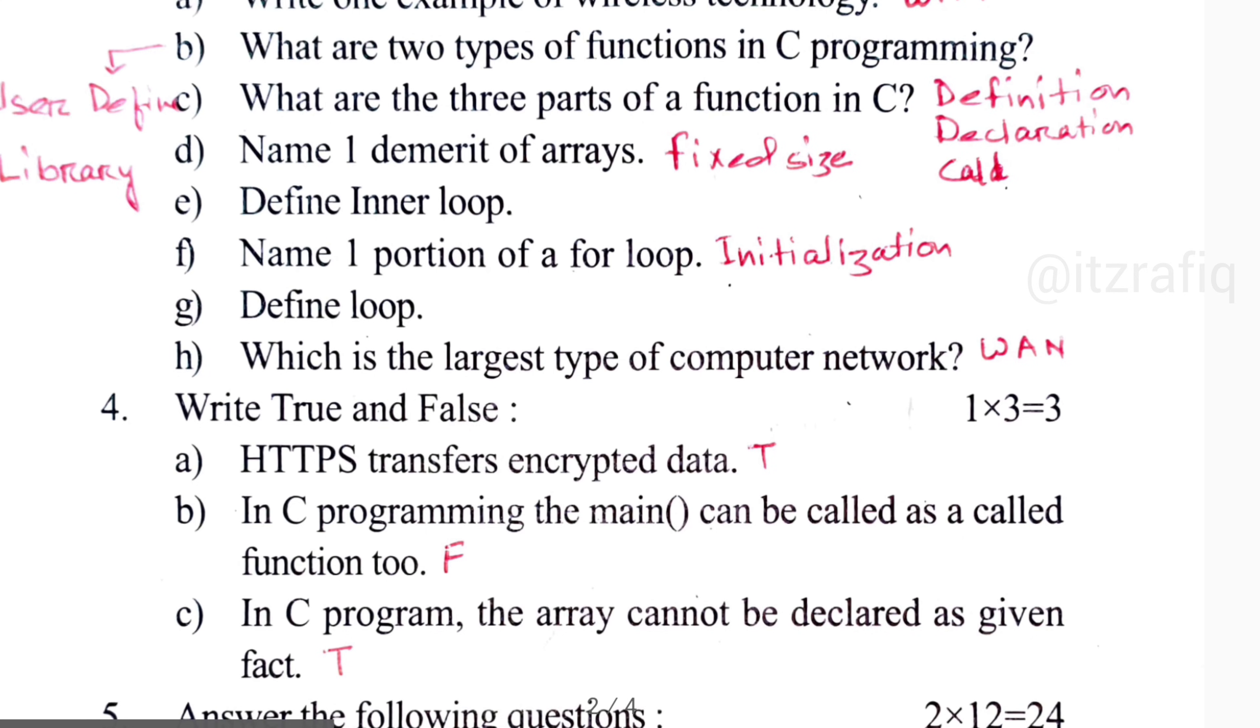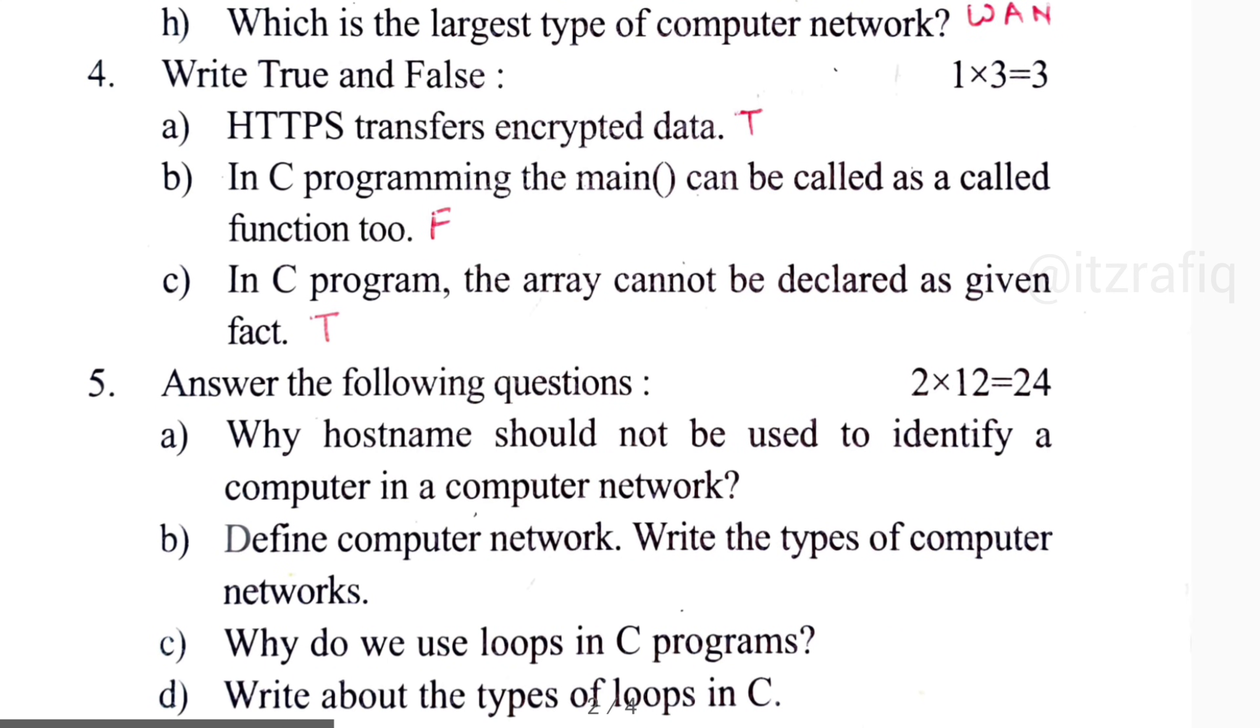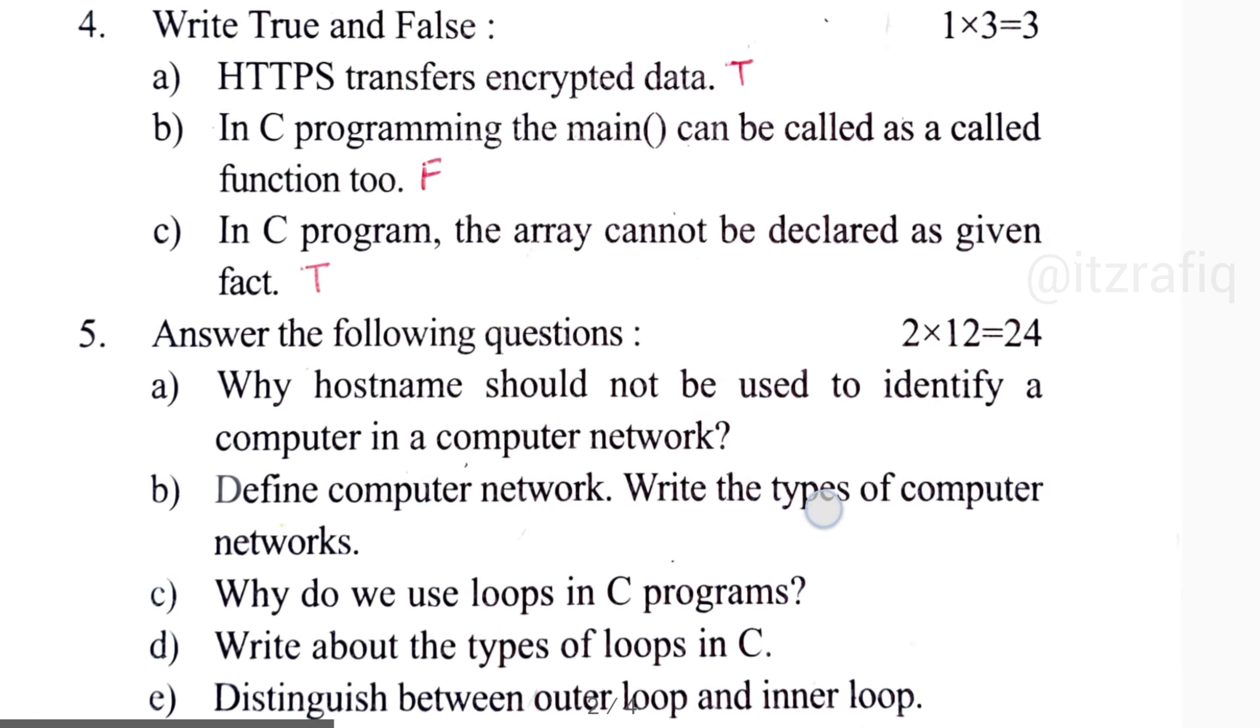True and false: HTTP transfers encrypted data - true. Number B, C programming main function can be called as a called function - it will be false, because no other function can call main function. It is the main part of a program. Number C, in C programming, array cannot be declared as given fact - it is true.